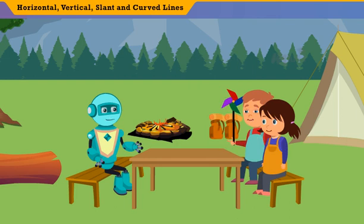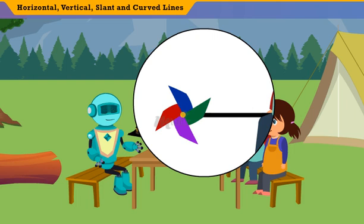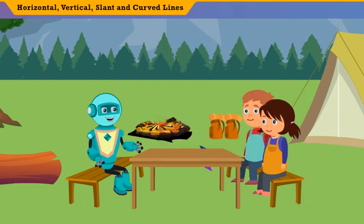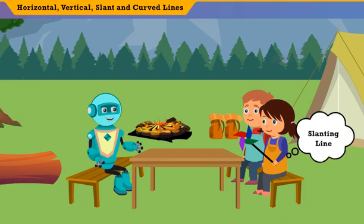Wow. So, up to down or down to up lines are called vertical lines, and side to side lines are called horizontal lines. That's right. What if I keep the origami fan neither in the upright nor in the lie down position, but keep it in an in-between position? Then that would be a slanting line. Lines are slanting if they don't go straight across or straight up or down. They look like a slope.